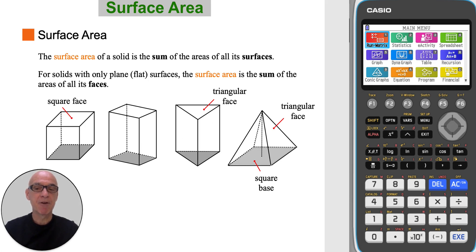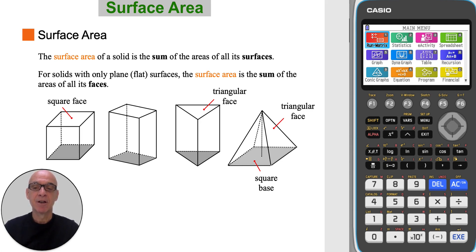The surface area of a solid is the sum of the areas of all its surfaces. For solids with only plane or flat surfaces, the surface area is the sum of the areas of all its faces.